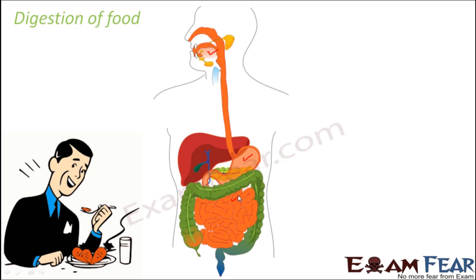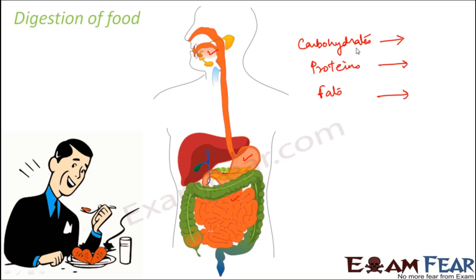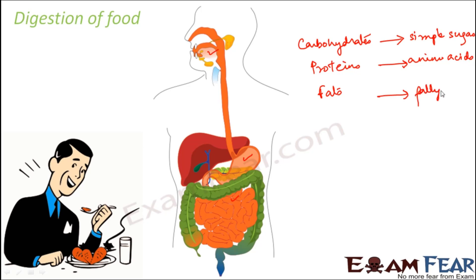If you observe closely, the complex constituents of food — carbohydrates, proteins, fats — are quite complex in their structure. All these are broken down into simpler forms by the action of various enzymes. Carbohydrates are broken down into simple sugars, proteins into amino acids, and fats into fatty acids.